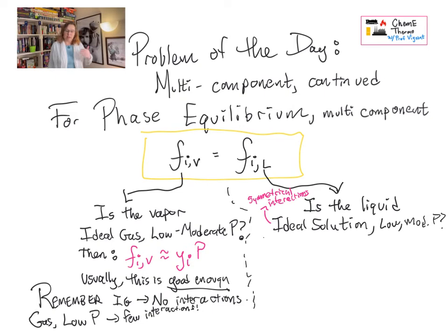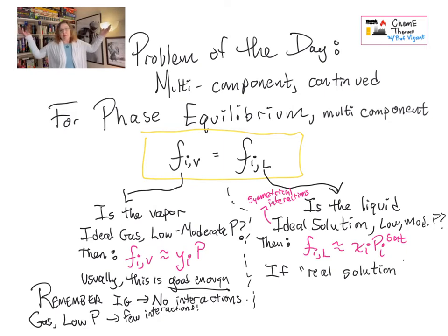If you have an ideal solution at low to moderate pressure, you can then assume that the fugacity of the liquid is equal to xi times pi sat. You will recognize this as the other half of Raoult's Law. What you're assuming when you write Raoult's Law is you're assuming that the vapor side is well described by ideal gas and the liquid side is well described by ideal solution. Sometimes this is true, and sometimes that's all the complexity we need.